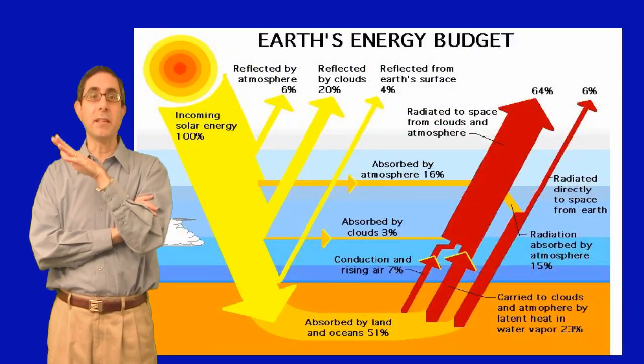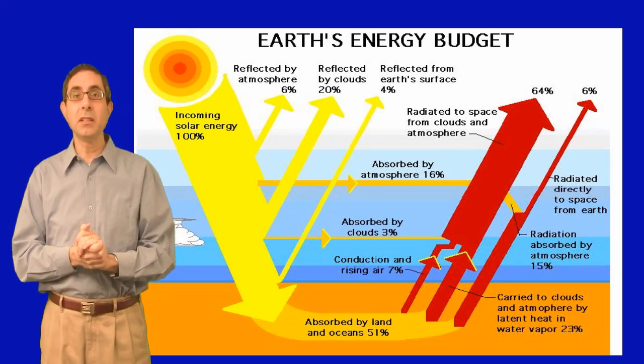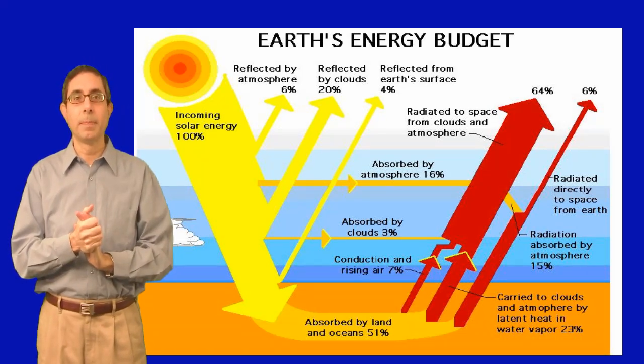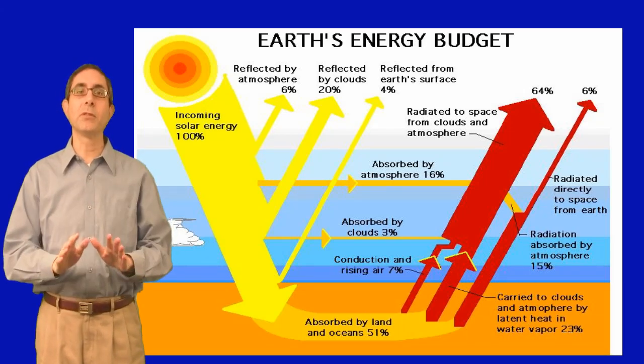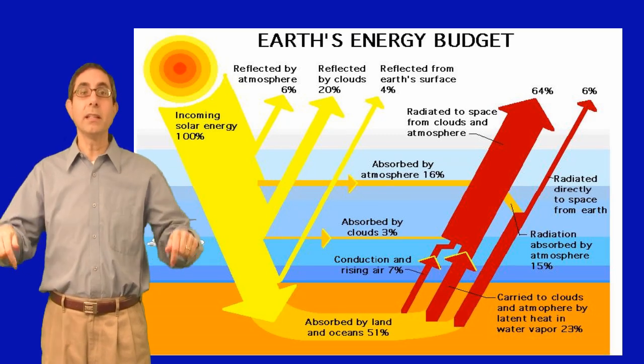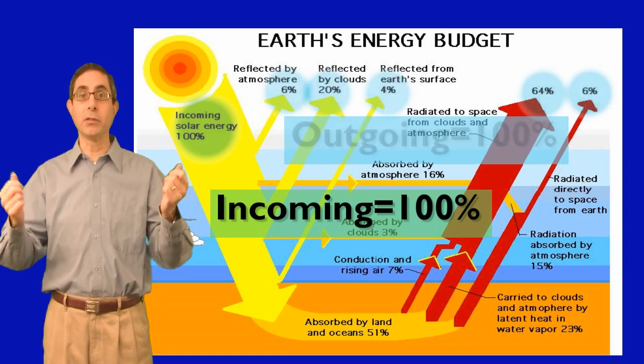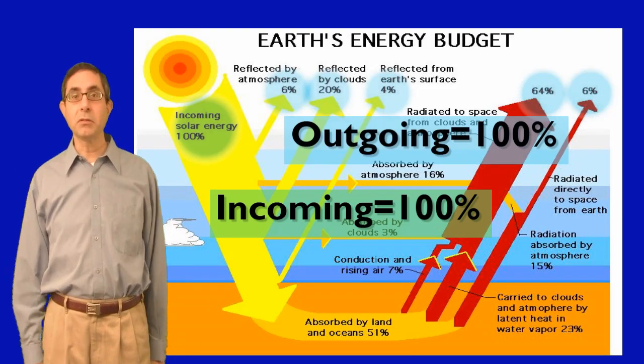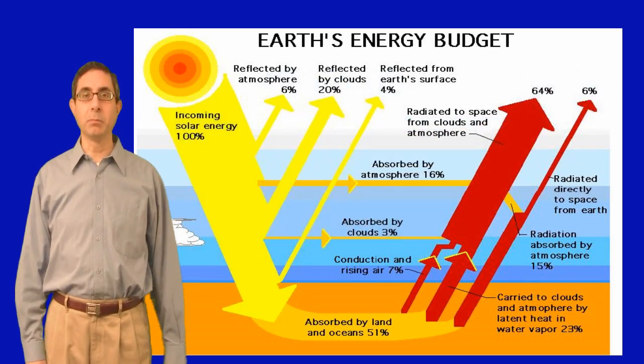With all this absorption of heat by atmospheric gases, you may be wondering why the Earth doesn't continue to heat up over time. The Earth maintains a fairly even temperature because the atmosphere constantly loses heat to outer space. The total incoming radiation is in approximate equilibrium with the total outgoing radiation. I guess you can say that when it comes to energy, the Earth keeps a balanced budget.